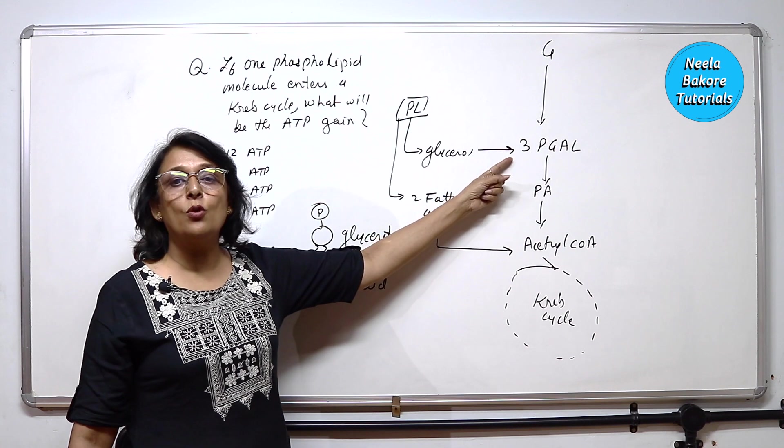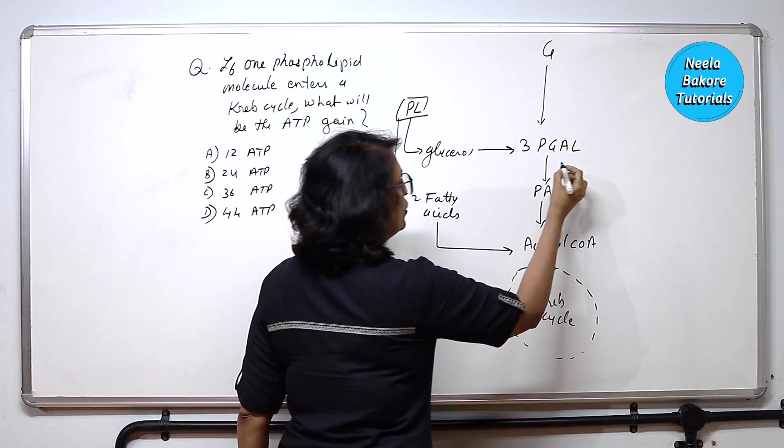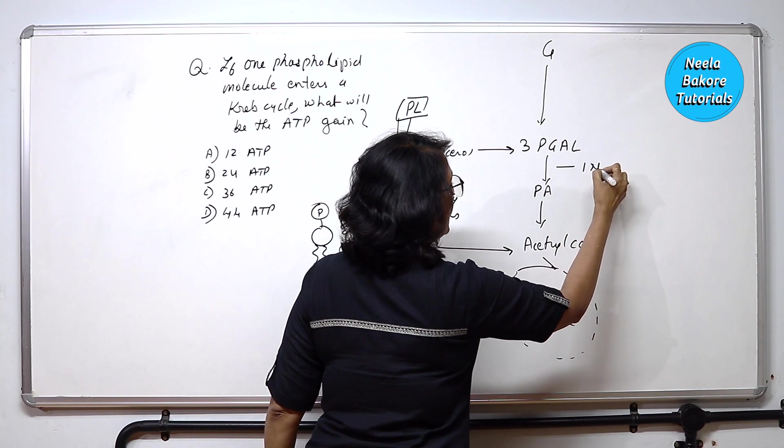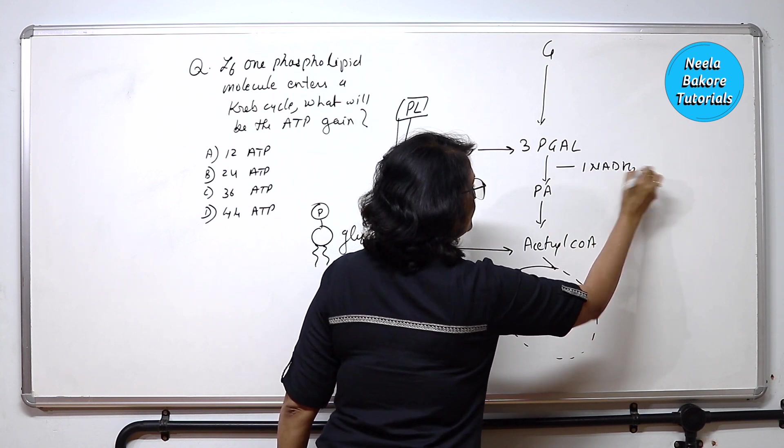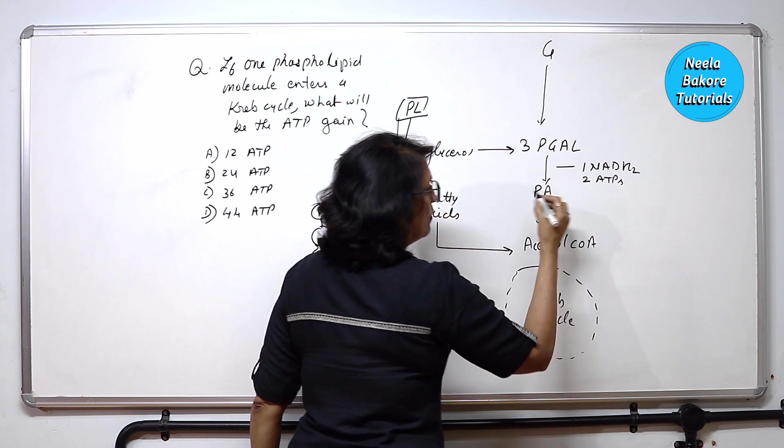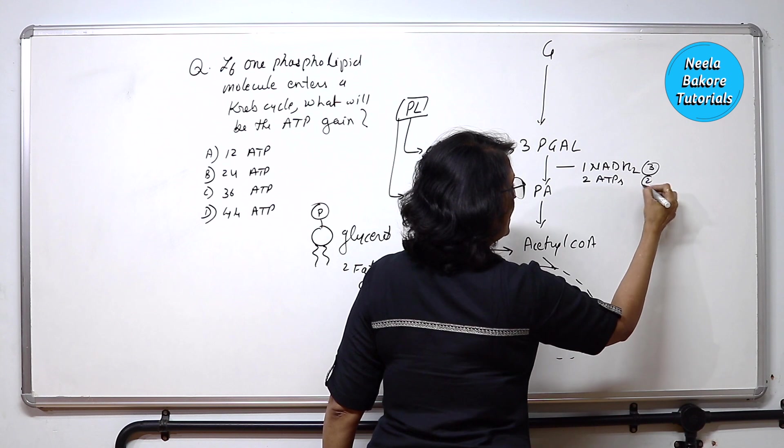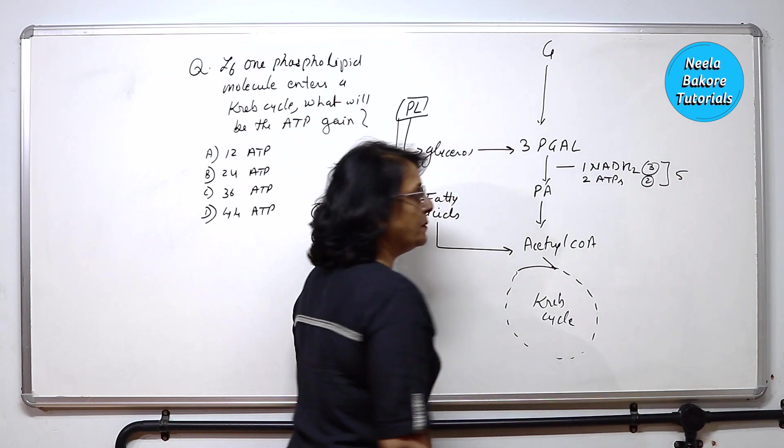So if it joins here, then from PGAL to pyruvic acid, we get 1 NADH2 and we get 2 ATPs. 1 NADH2 is worth 3 ATPs plus 2 ATPs. This will give us 5 ATPs here.